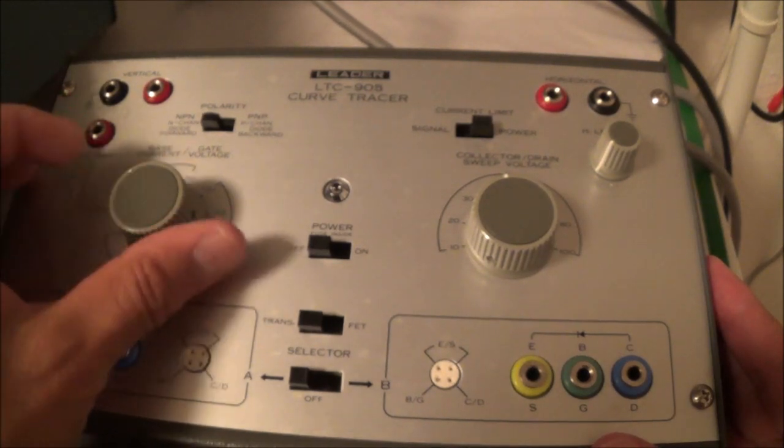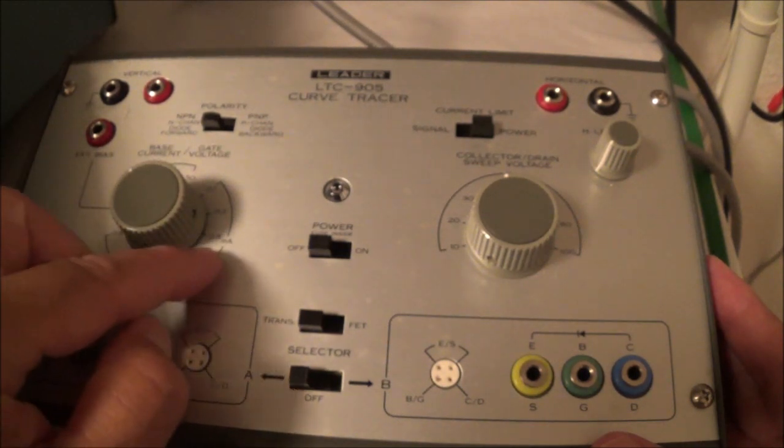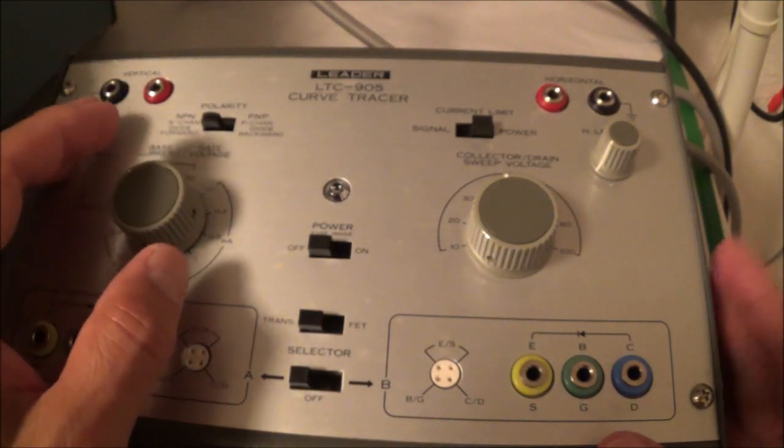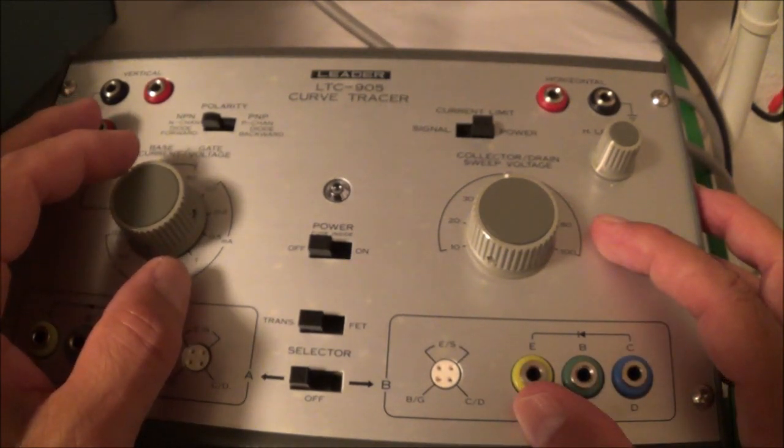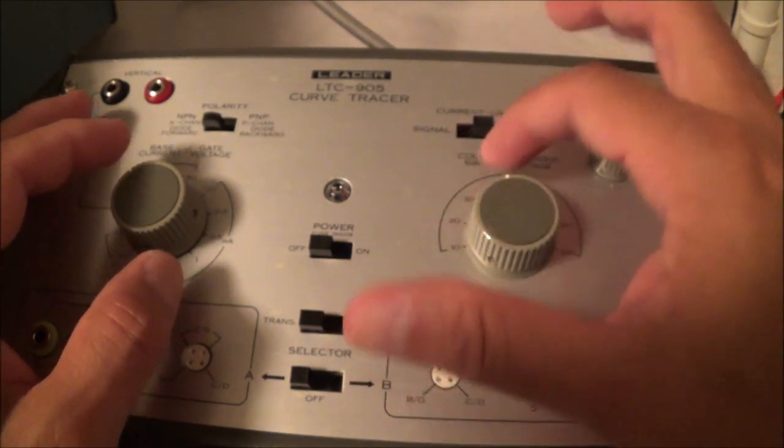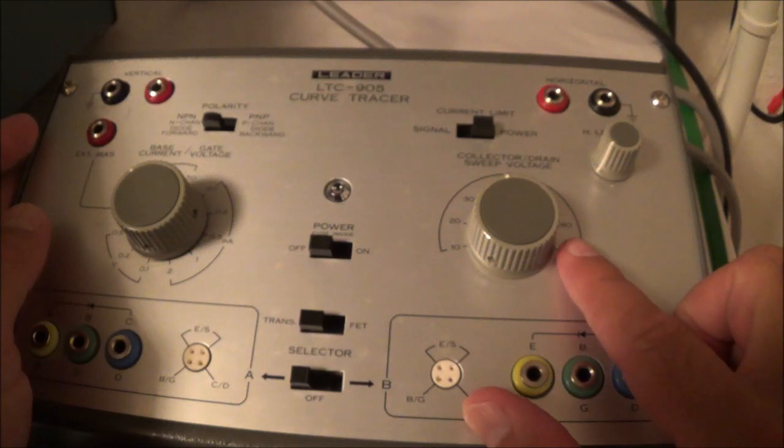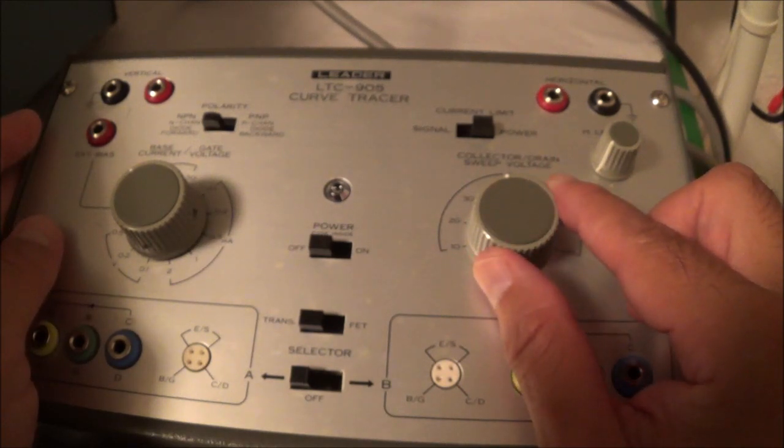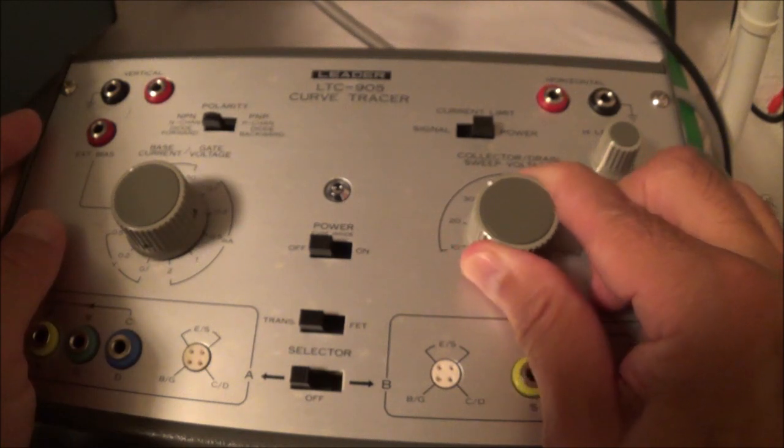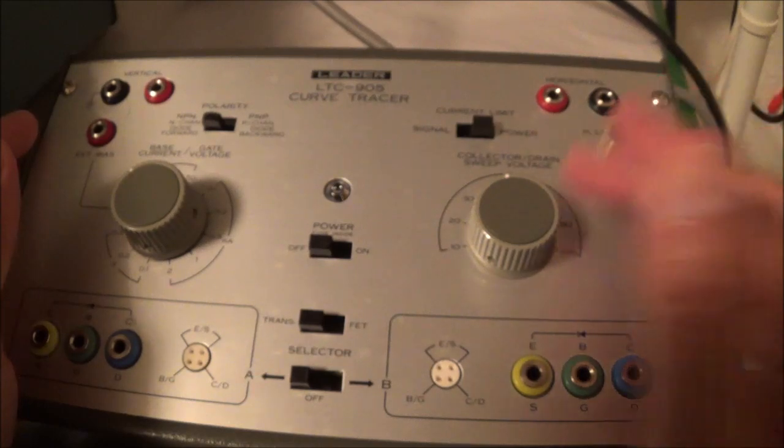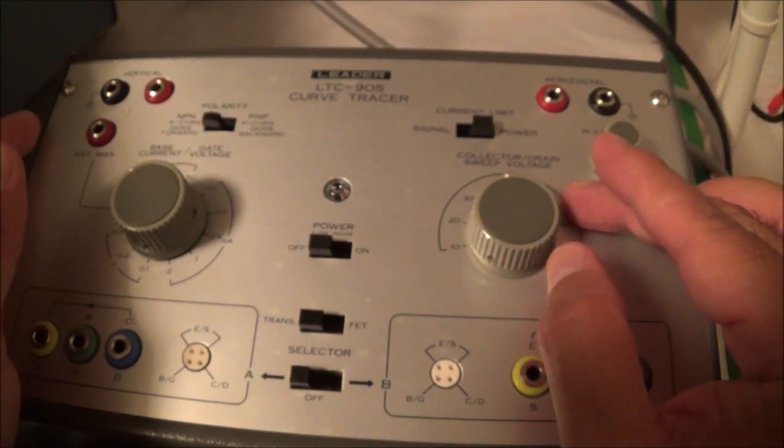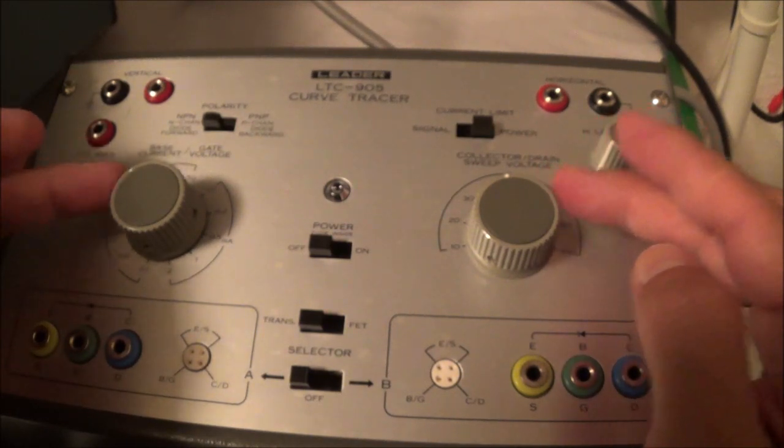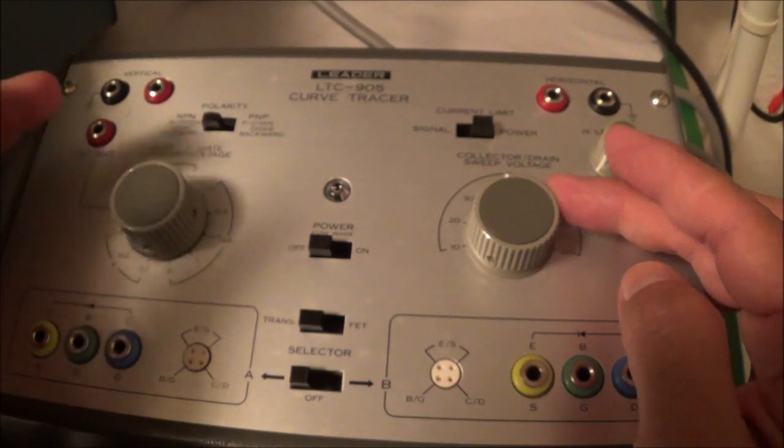Here the base current can be adjusted. I think there's like at least ten steps. On the other side here we've got voltage. Basically you're also going to be applying a DC rectified sine wave between the emitter and the collector. When these two waveforms apply to the transistor, that'll give you basically the curve family that you're going to see on your oscilloscope.